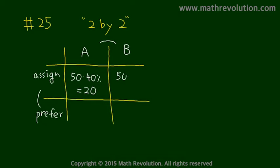And team B was 50 times 60% which is 30. So 30 people were assigned to team B.